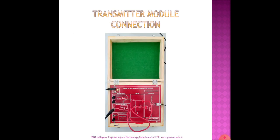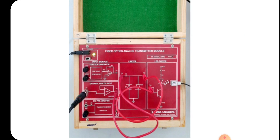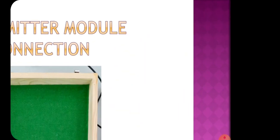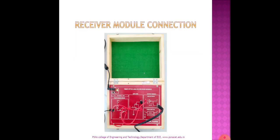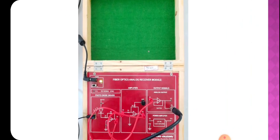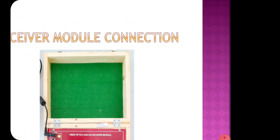The transmitter module connection shown step by step goes from the external or internal function generator to the limiter circuit, then from the limiter circuit to the LED driver. In the receiver board, there is a photo detector receiver; the signal is amplified and given to the analog output. From the analog output, we connect the DSO or CRO. The receiver module goes from the photo detector to the amplifier, then to the analog output circuit.